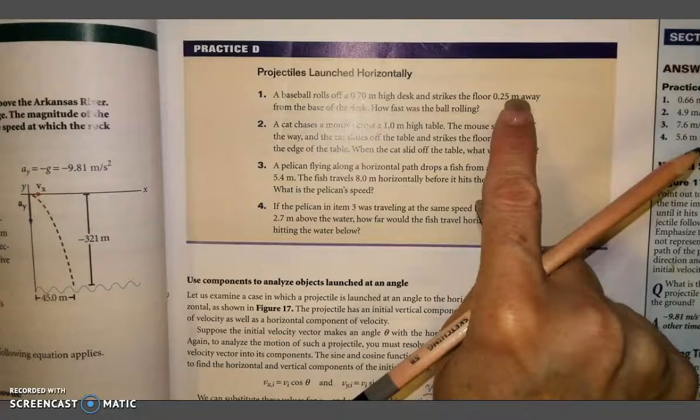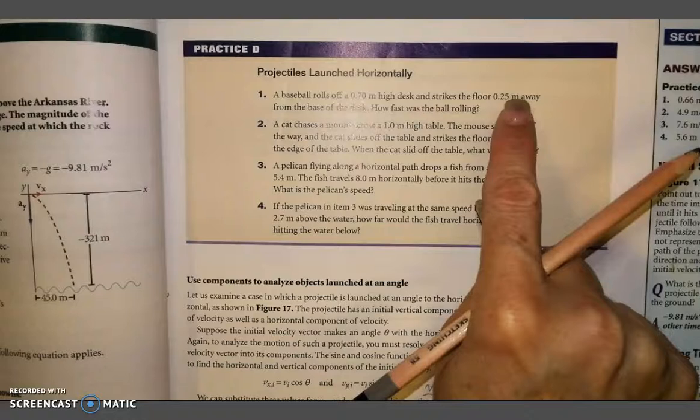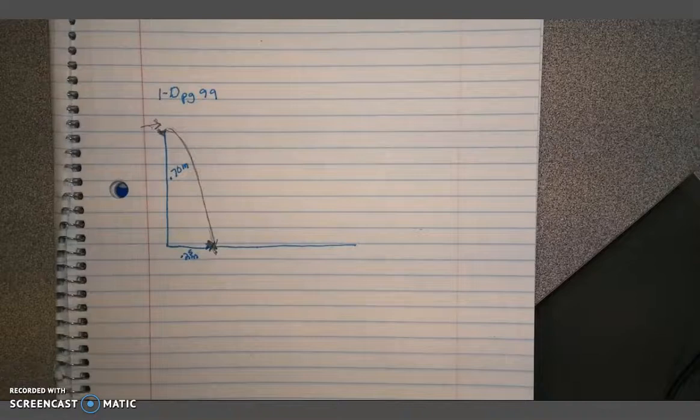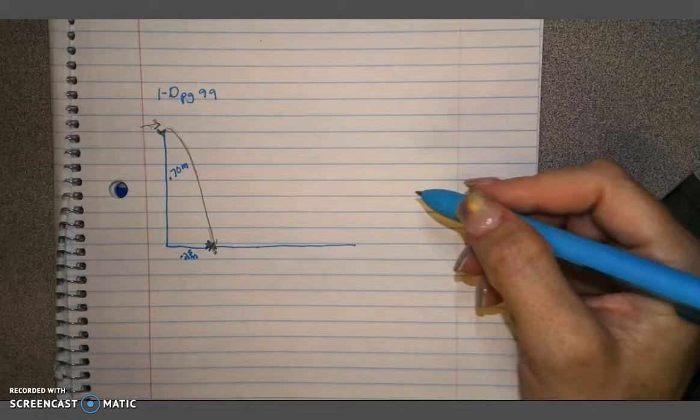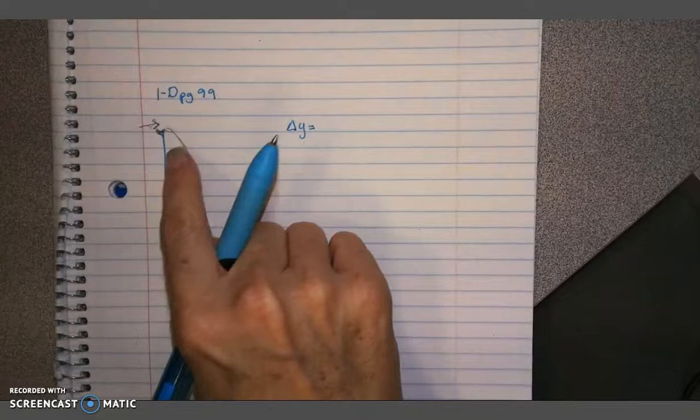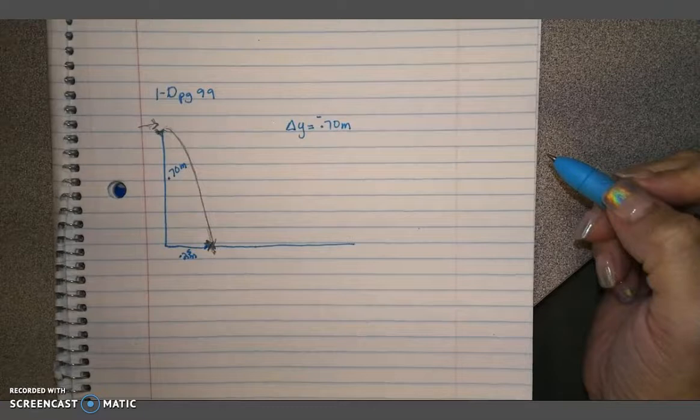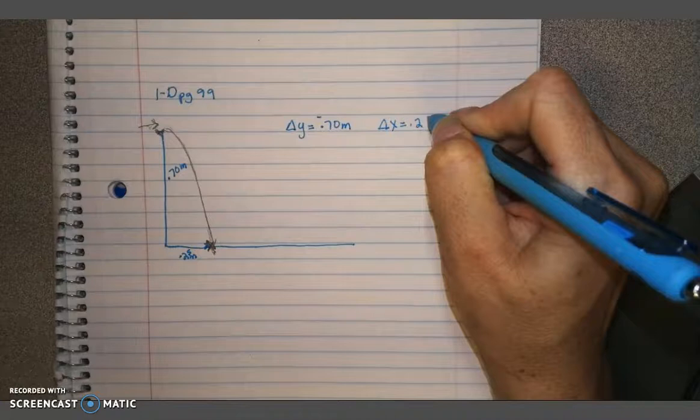So that being said, we're going to be doing this problem. Baseball rolls off a 0.70 meter high desk, and strikes the floor at 0.25 meters away from the base of the desk. How fast was the ball rolling? So, we have some information. What we have here is we have delta y and we have delta x. Delta y, change in distance from here to here, is 0.70 meters. We call that almost, you can say, minus 0.7 because we're falling down. And our delta x is 0.25 meters. So those are the two knowns that we have.